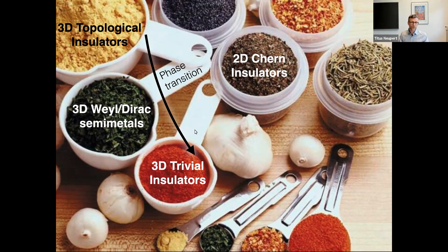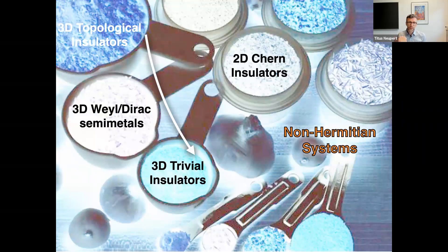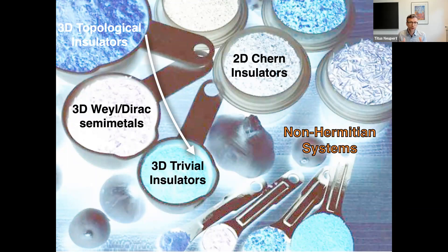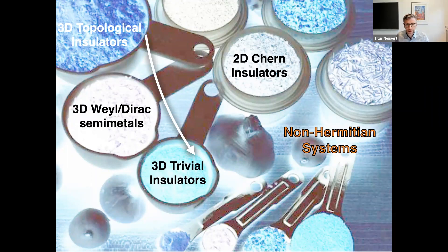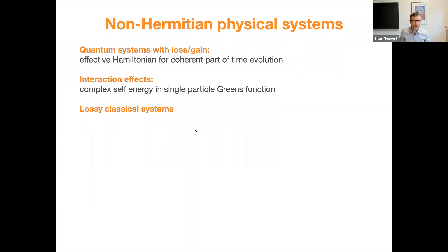Now I want to go to the second part of my talk about non-Hermitian systems — to look at all the well-established concepts in Hermitian Hamiltonians and see their fate when we allow for operators that are not Hermitian anymore. Is there a sense of topology and what happens? One might want to first know why I'm asking this question.